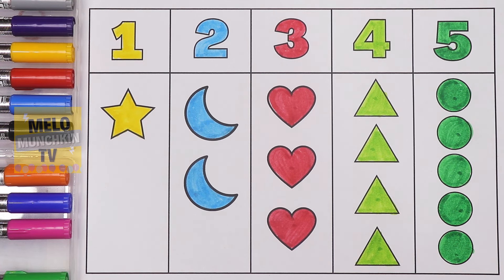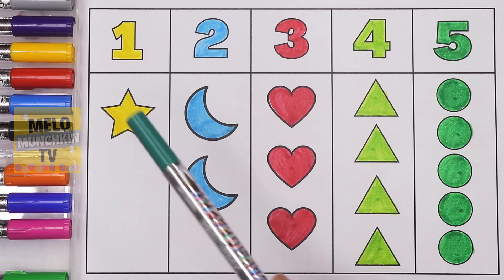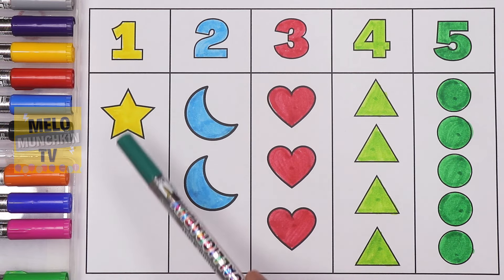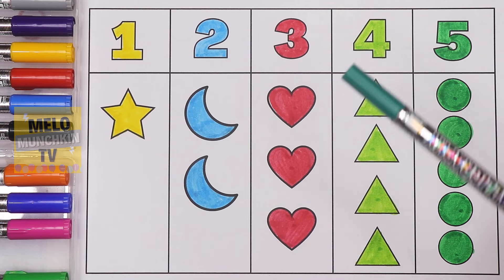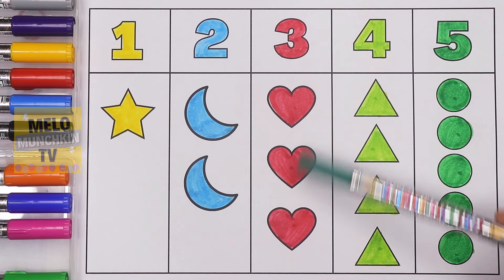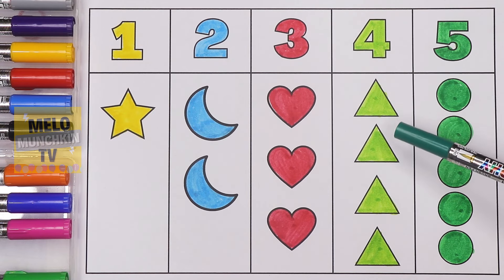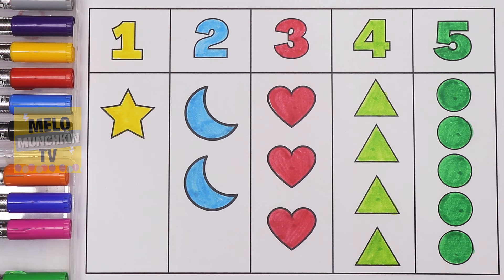So we have completed our counting numbers, shapes, and colors. Let's repeat once again: one star, two crescents, three hearts, four triangles, five circles. That's it for today, kids! I hope you liked this video. If you did, hit a thumbs up and share this video with your friends. See you in my next video — till then, take care and bye!